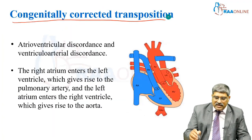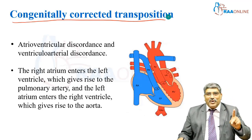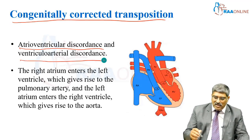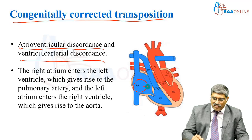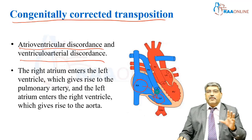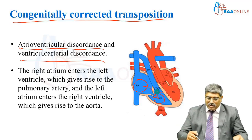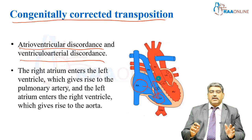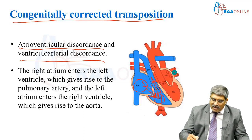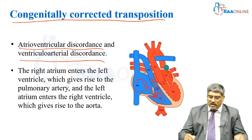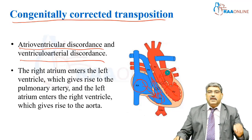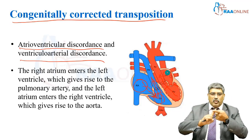Congenitally corrected transposition is characterized by atrioventricular discordance and ventriculoarterial discordance. The right atrium, which was supposed to go into the right ventricle, instead goes into the left ventricle, and the left ventricle, which was supposed to give rise to the aorta, instead goes into the pulmonary artery. The left atrium, which was supposed to drain into the left ventricle, drains into the right ventricle, and the right ventricle, instead of giving rise to the pulmonary artery, gives rise to the aorta. So both are switched.